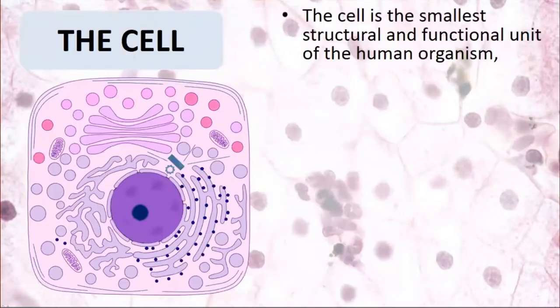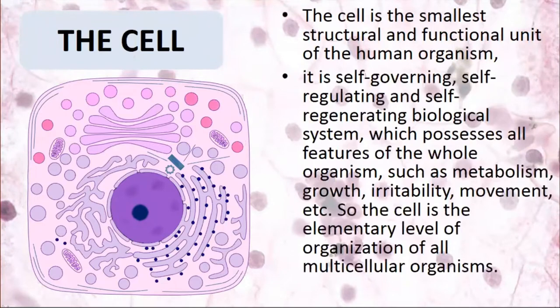So what is the cell? The cell is the smallest structural and functional unit of the human organism. It is a self-governing, self-regulating, and self-regenerating biological system which possesses all features of the whole organism, such as metabolism, growth, irritability, and movement. The cell is the elementary level of organization of all multicellular organisms.